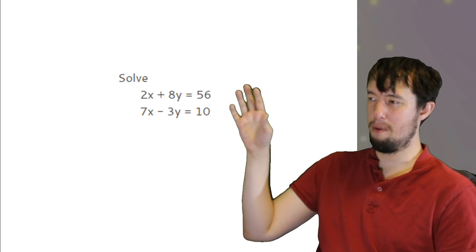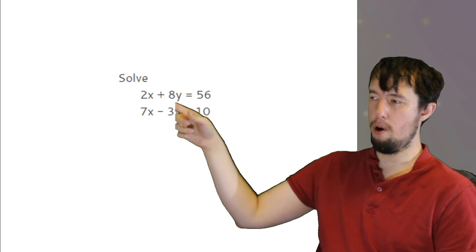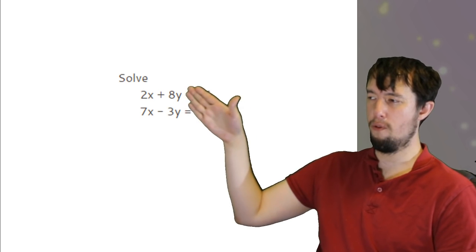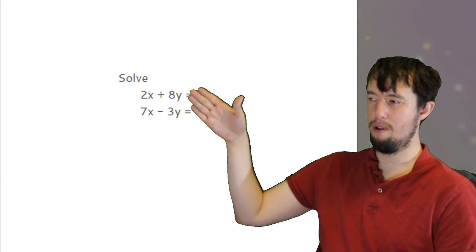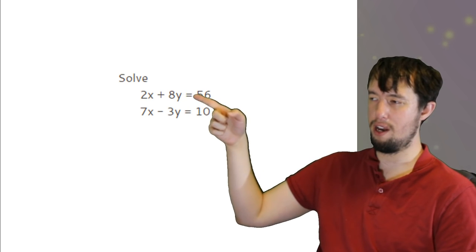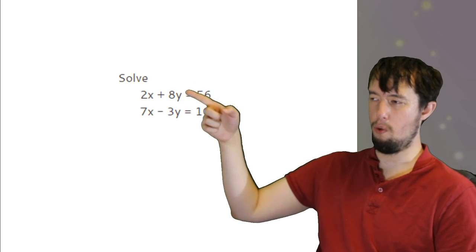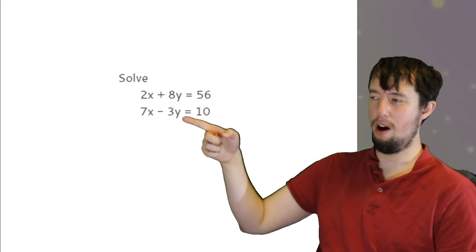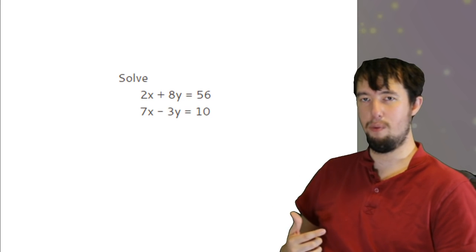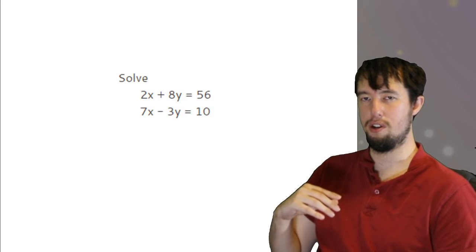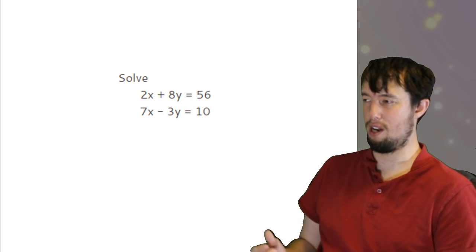Simultaneous equations might come up. Make sure that you put either the x's or the y's the same. Most people find the y's easier to get the same. So I times the top equation all by three and the bottom equation all by eight, so that I make both of these y's 24y, and then work your way to go downwards. If you don't know simultaneous equations, there are videos out there, revision sites, etc.